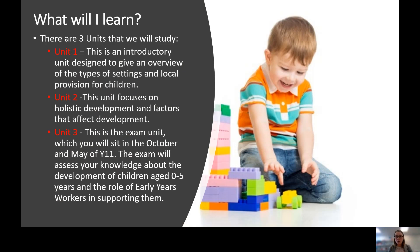The course involves three different units. Unit 1 is an introductory unit where we give you an overview of the types of childcare settings and placements available within Nottingham and nationally. Unit 2 takes us through holistic development — how children grow and develop. We look at their physical growth, intellectual development, how they learn language and communication, and how they develop their emotional and social side, as well as what factors would affect them.